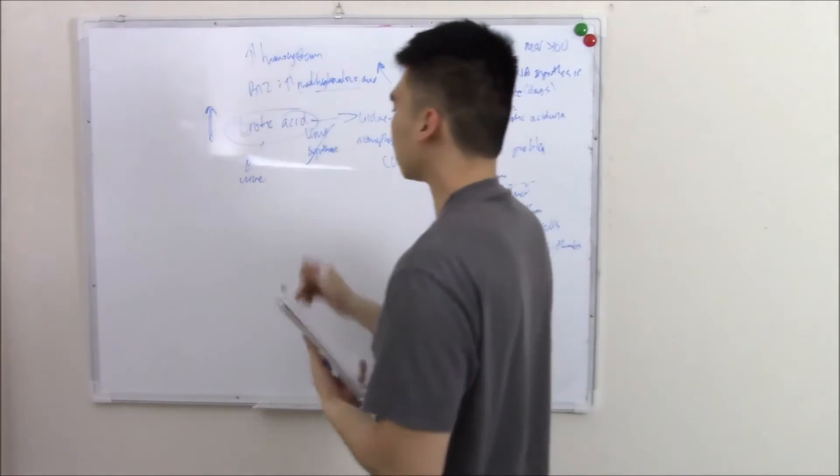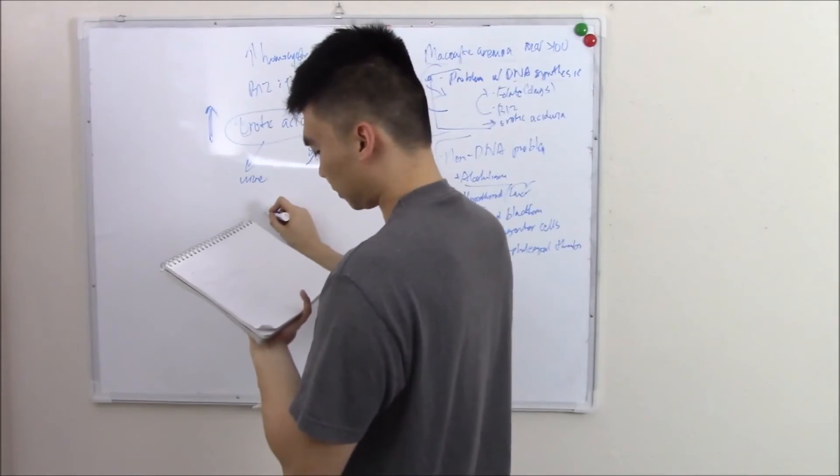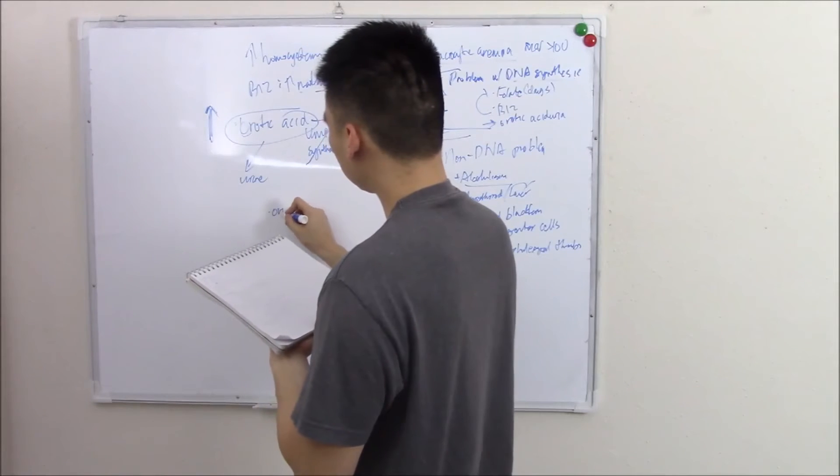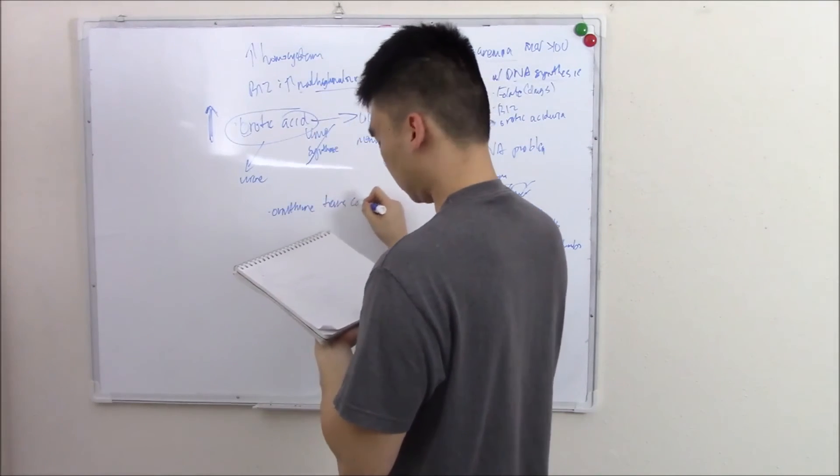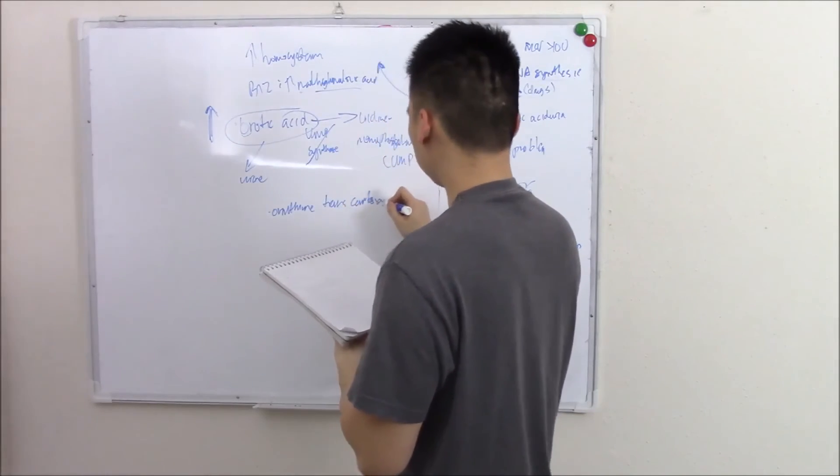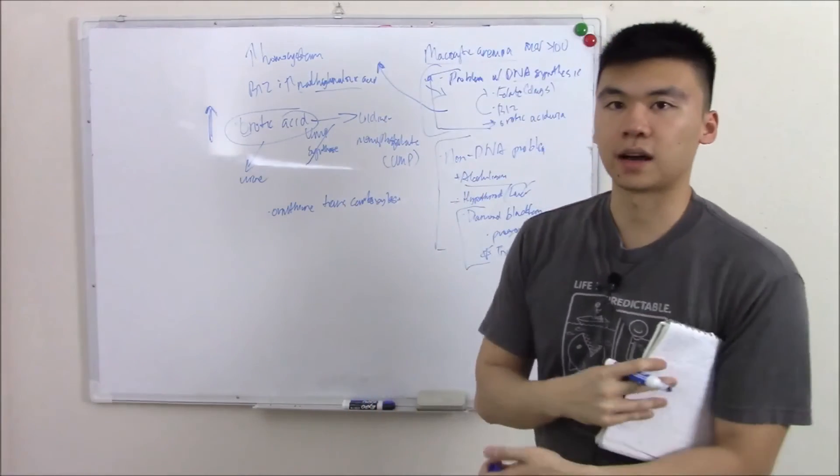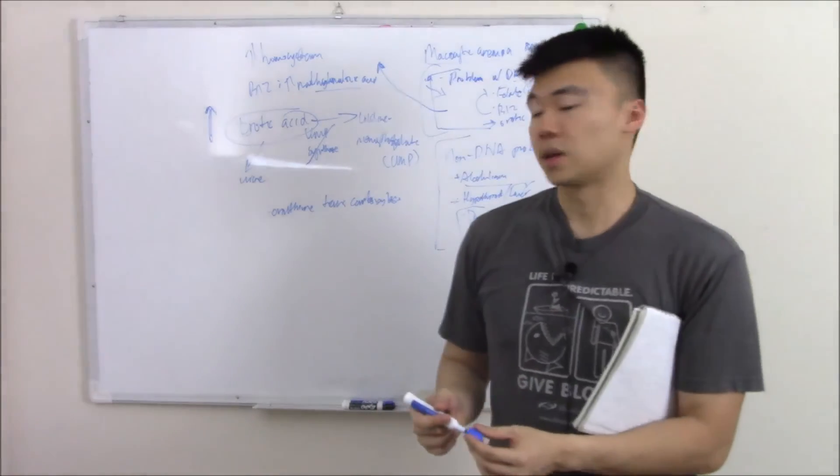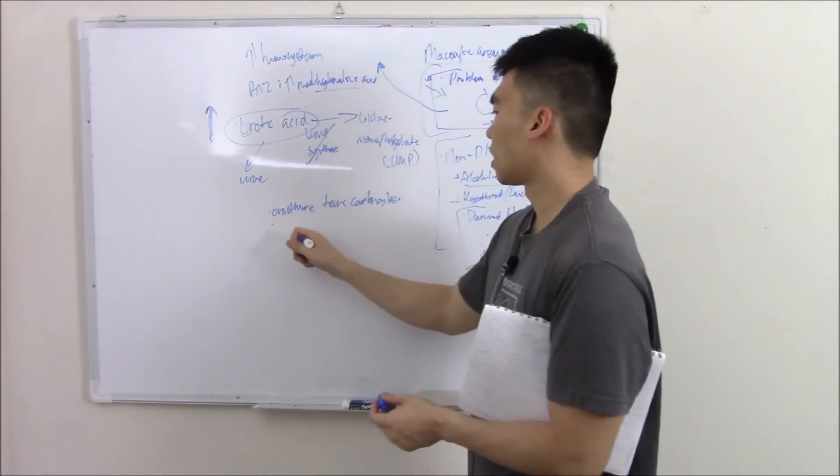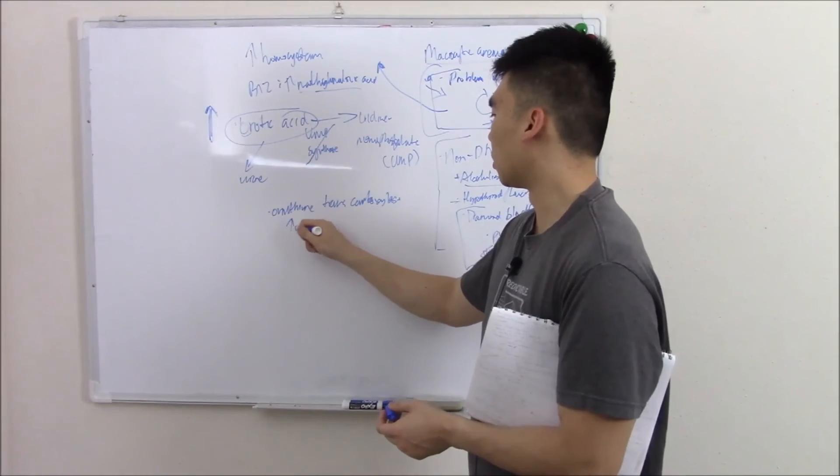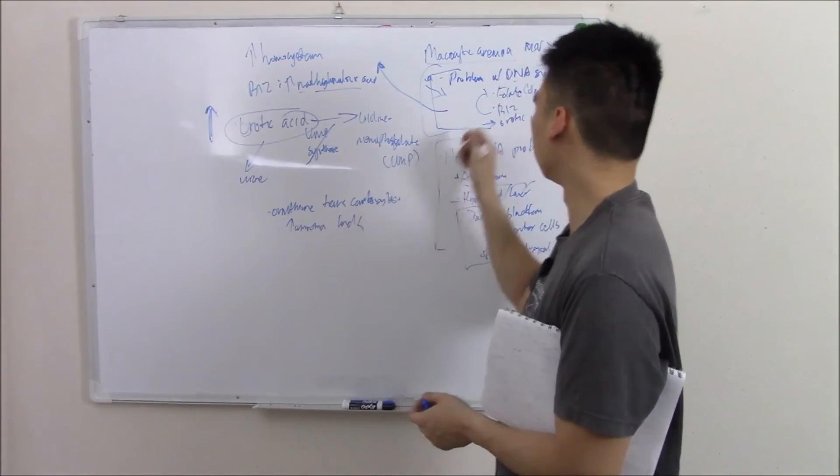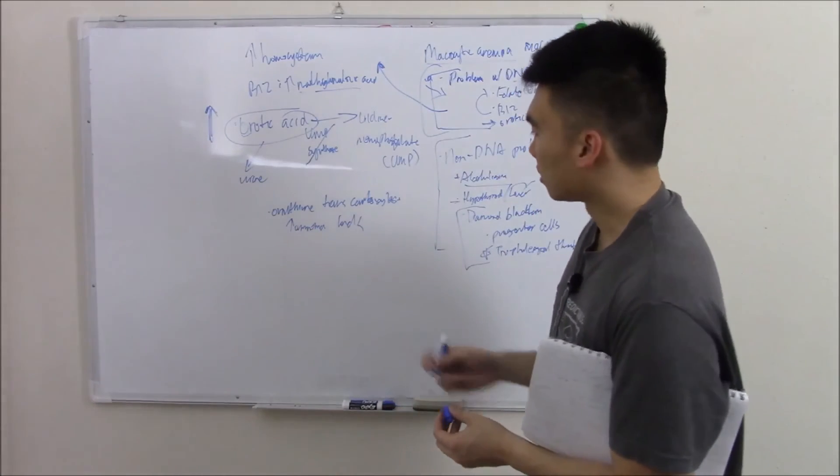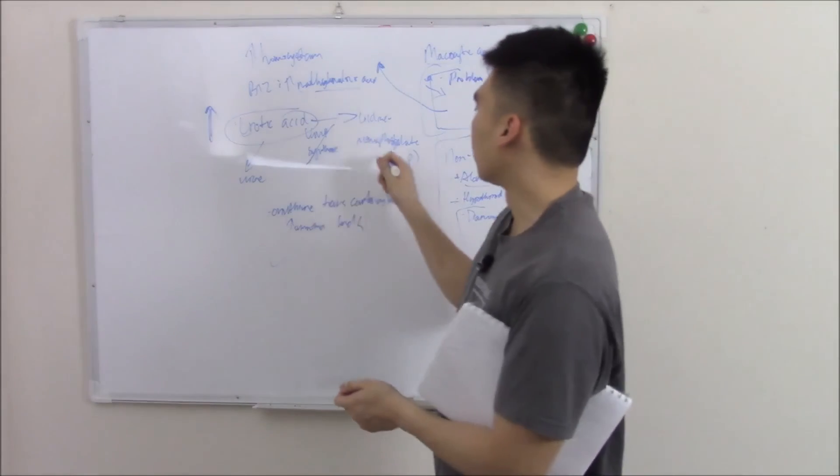Now there's another enzyme deficiency that causes an increase in orotic acid, and that's a deficiency in the enzyme ornithine transcarboxylase. Ornithine transcarboxylase is found in the urea cycle, and because it's found in the urea cycle, you're also gonna have increased ammonia levels, which is not seen in orotic aciduria. So that's a dead giveaway. How do you treat this? You just give them UMP—you just kind of bypass the roadblock.